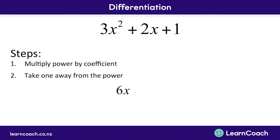Now we're going to do the same thing for this 2x. Again, we multiply the power by the coefficient. We don't have a written power here, which means it's the same as saying to the power of 1. So the number in front of x is going to be 1 times 2, which is 2 again. And we keep the plus in the middle.